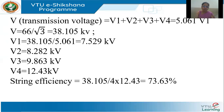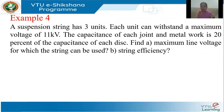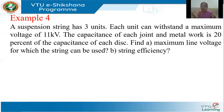Now let us take one more example. A suspension insulator has three units, each of which can withstand a maximum of 11 kV. The capacitance of each joint and metal work is 20% of the capacitance of each disk, meaning C1 = 0.2·C, so m = 0.2. Find the maximum line voltage for which the string can be used and the string efficiency.